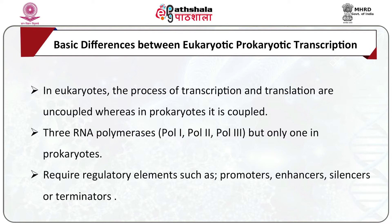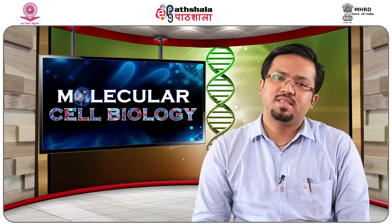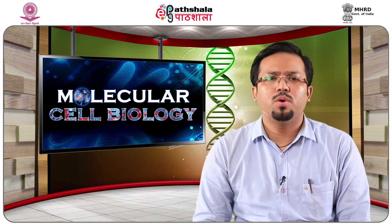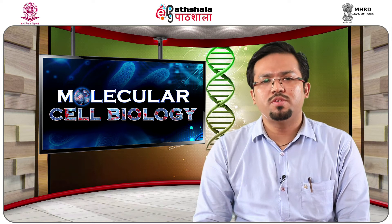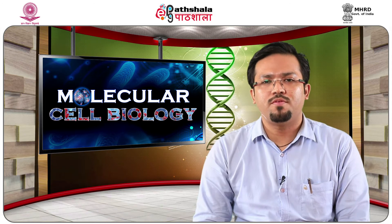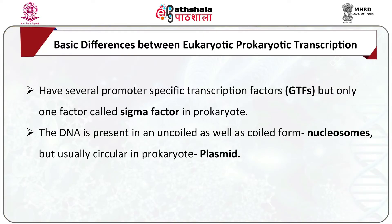Eukaryotic transcription has regulatory elements such as promoter, enhancer, silencers, or terminators — for example, the TATA box located 25 bases upstream of the start site. In eukaryotes there are several promoter-specific transcription factors referred to as general transcription factors or GTFs, whereas in prokaryotes a single initiation factor is required, that is the sigma factor.